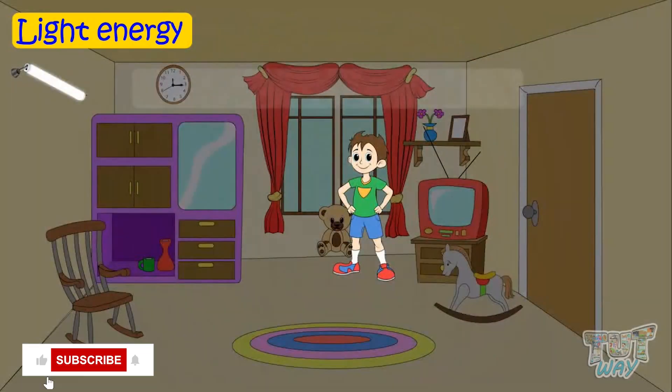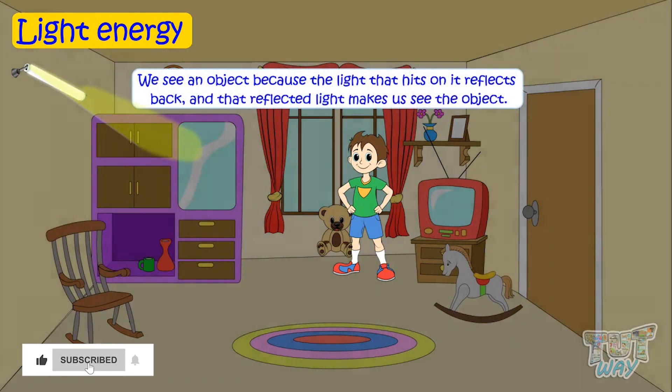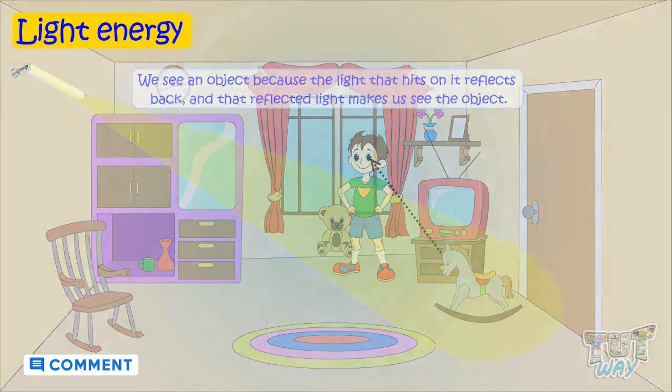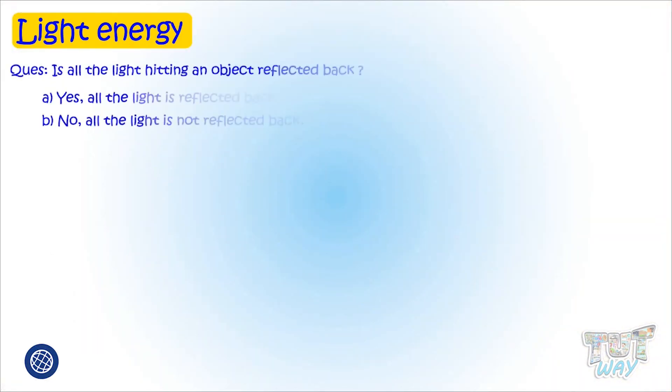Kids, we learned that we see any object because of the light that hits on it, reflects back, and that reflected light makes us see that object. So let's learn more about it. Does all the light hitting an object reflect back or some of it? Let's learn. Actually, not all light is reflected back. Some of it is absorbed by the object.